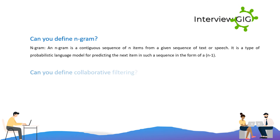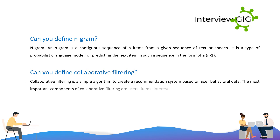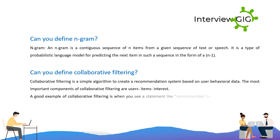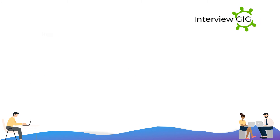Can you define collaborative filtering? Collaborative filtering is a simple algorithm to create a recommendation system based on user behavioral data. The most important components of collaborative filtering are users, items, and interest. A good example of collaborative filtering is when you see a statement like 'recommended for you' on online shopping sites, which appears based on your browsing history.